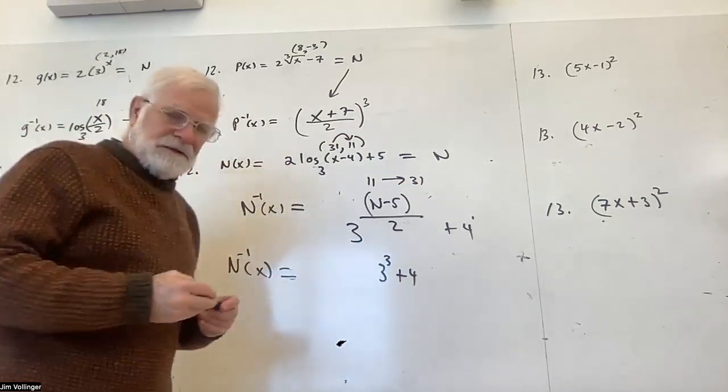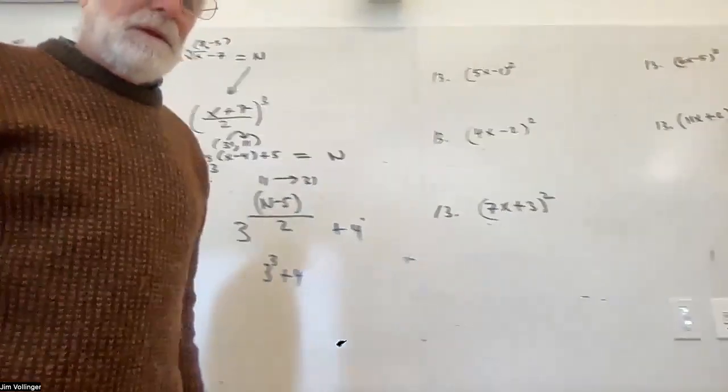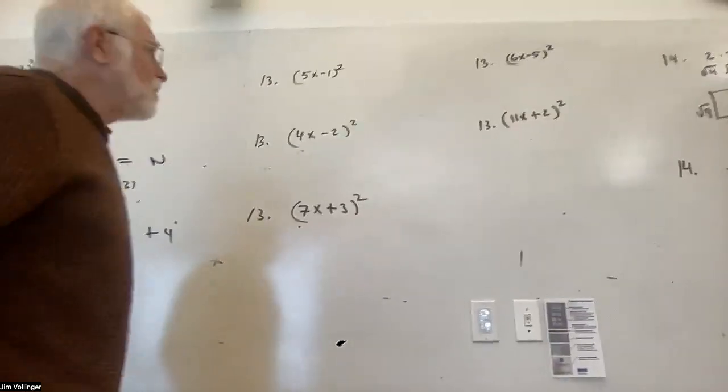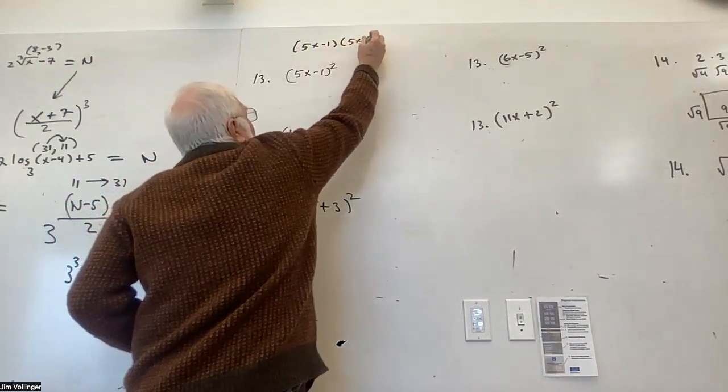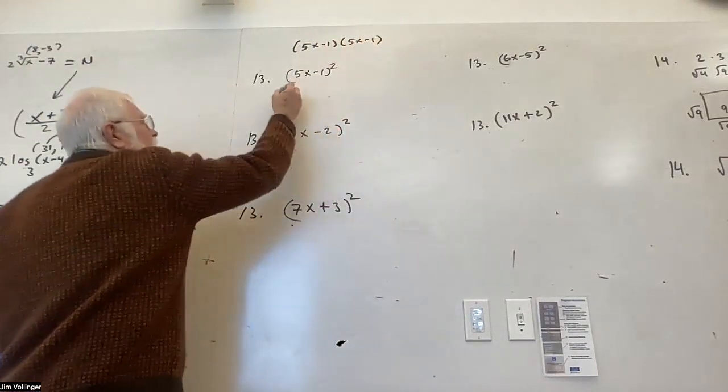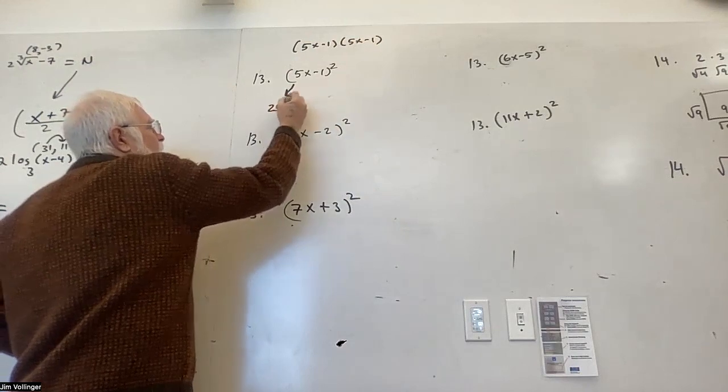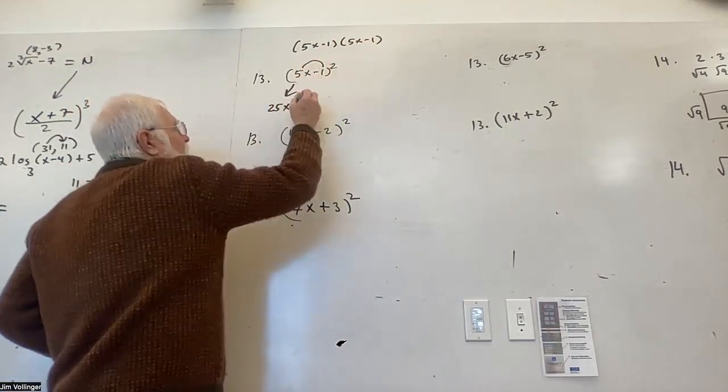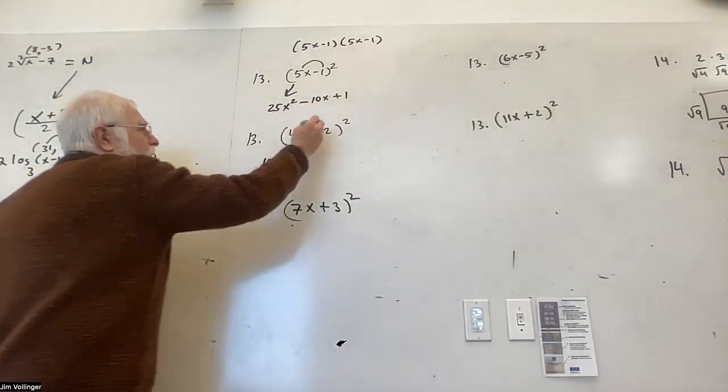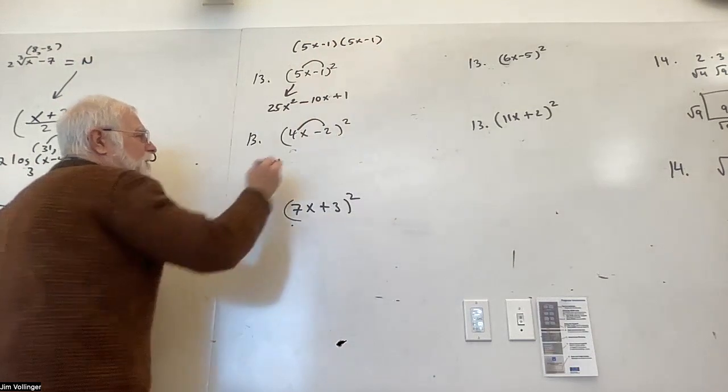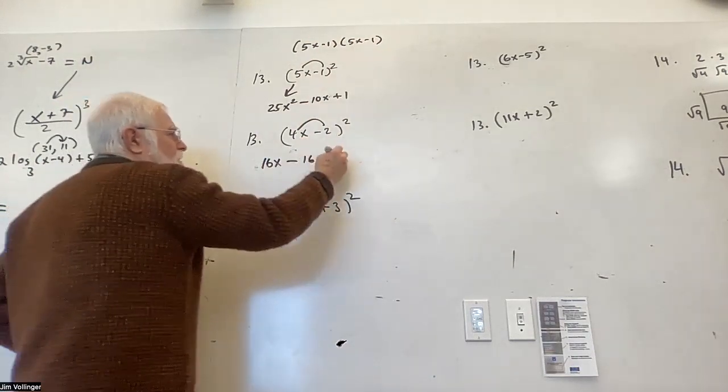Okay, now we got some binomial squaring. Okay, and you really shouldn't have to write this out as 5x minus 1 times 5x minus 2. Okay, you should be taking a shortcut. 25x squared doubling minus 10x plus 1. 4x squared. That becomes minus 8x. Double it. Minus 16x plus 4.